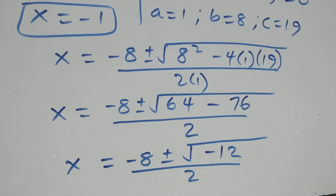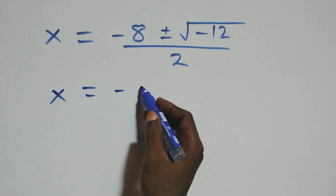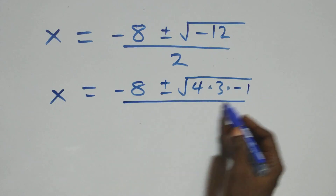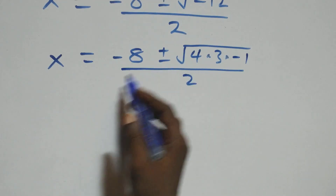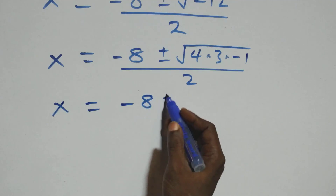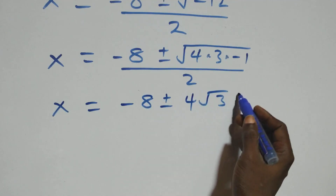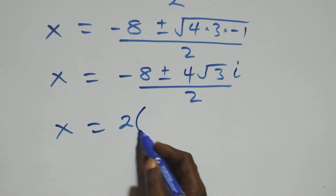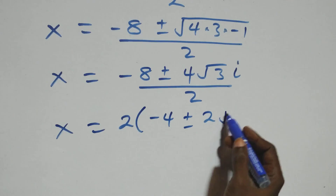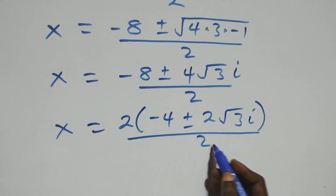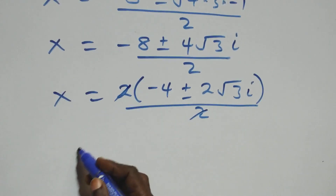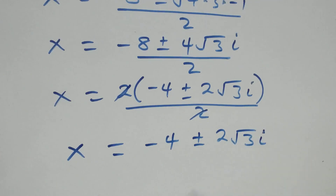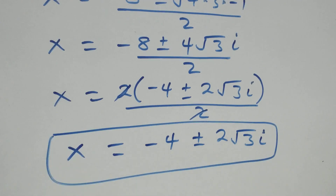Then we have two possible cases: x plus 1 equals to 0, giving x equals to minus 1, which is also a real solution. And we have x squared plus 8x plus 19 equals to 0, a quadratic equation where a equals to 1, b equals to 8, c equals to 19. Applying the quadratic formula: x equals to minus 8 plus or minus square root of 64 minus 76, that is minus 12, all over 2. This becomes x equals to minus 4 plus or minus root 3 i. Here we have 2 complex solutions.